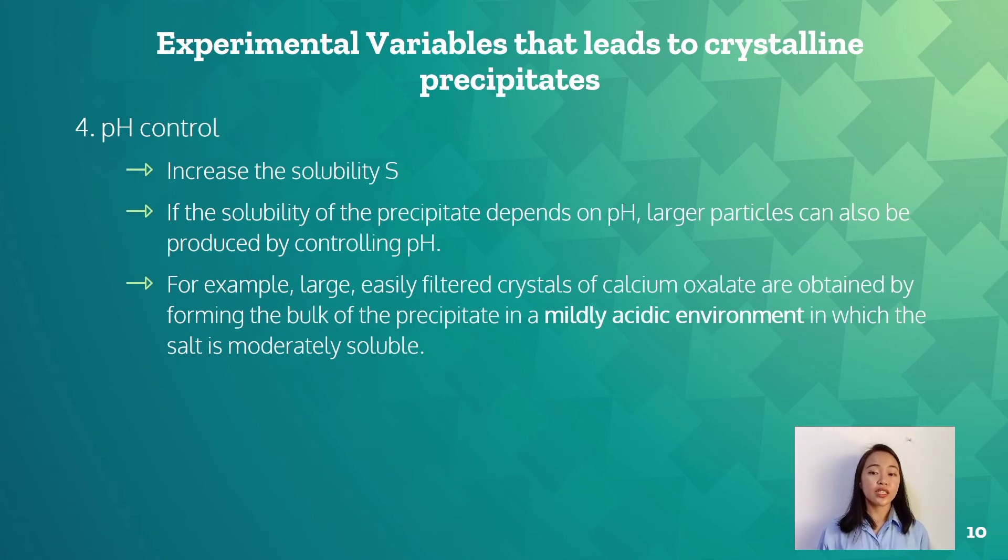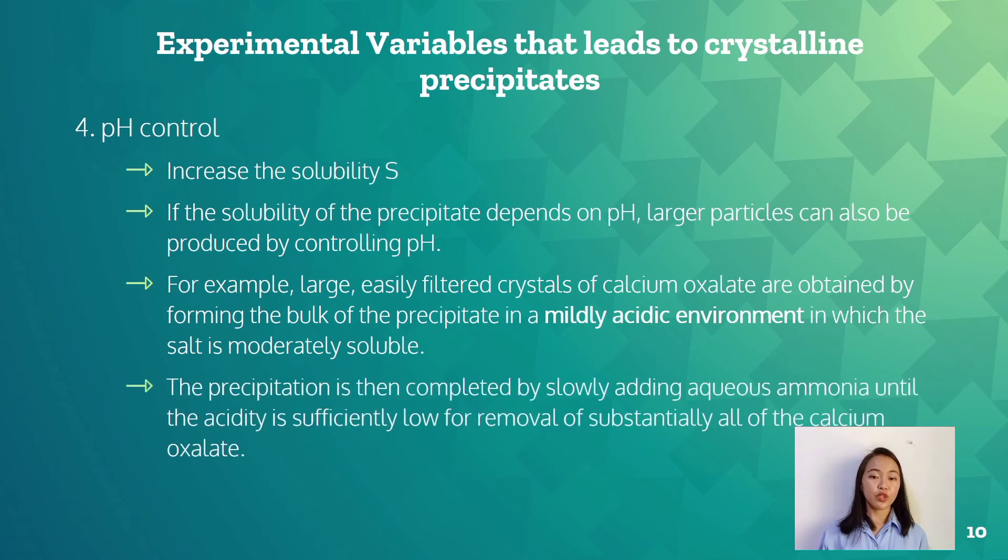Large easily filtered crystals of calcium oxalate are obtained by forming the bulk of the precipitate in a mildly acidic environment in which the salt is moderately soluble. The precipitation is then completed by slowly adding aqueous ammonia until the acidity is sufficiently low for removal of substantially all of the calcium oxalate. The additional precipitate produced during this step deposits on the solid particles formed in the first step.